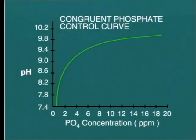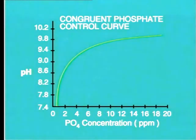In many plants, the control of phosphate addition and pH is guided by a curve like this. This shows the maximum pH level which should be allowed for any particular concentration of phosphate in the boiler water.